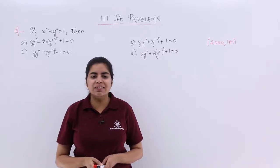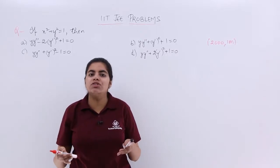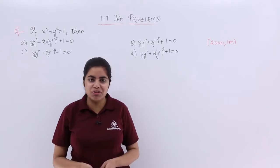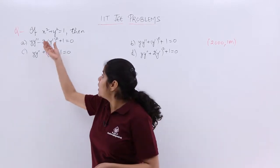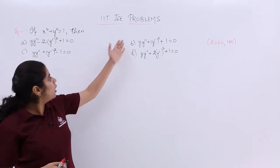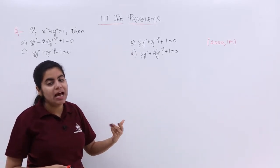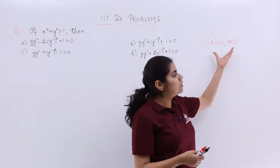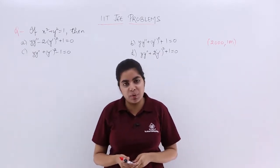In this video, let's see another IIT JEE problem based on the chapter of continuity and differentiability. The question is, if x² plus y² equals 1, then which of these 4 options is correct? The question has been asked in the IIT JEE examination in the year 2000 for 1 mark.